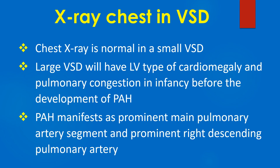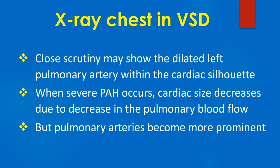Chest X-ray is normal in a small VSD. Large VSD will have LV type of cardiomegaly and pulmonary congestion in infancy before the development of pulmonary hypertension. Pulmonary hypertension manifests as a prominent main pulmonary artery segment and prominent right descending pulmonary artery. Close scrutiny may show the dilated left pulmonary artery within the cardiac silhouette. When severe pulmonary hypertension occurs, cardiac size decreases due to decrease in pulmonary blood flow, but pulmonary arteries may become more prominent.